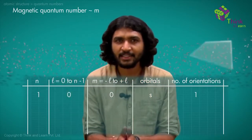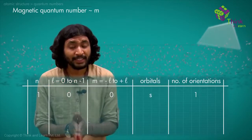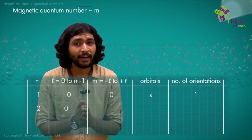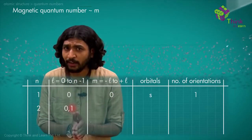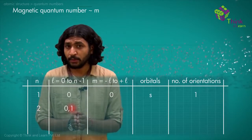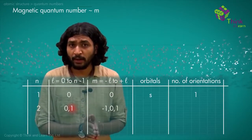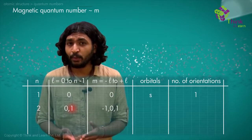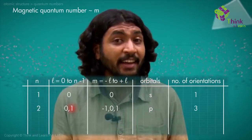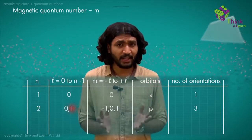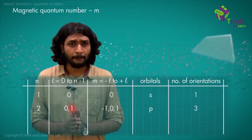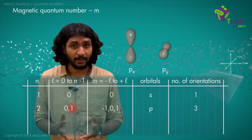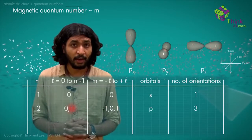For the second energy level, N = 2, L takes values 0 and 1. For L = 1, the magnetic quantum number M = −1, 0, and +1, giving three different angular orientations. This means P has three different orbitals. We represent them as Px, oriented along the x-axis; Py, oriented along the y-axis; and Pz, oriented along the z-axis.